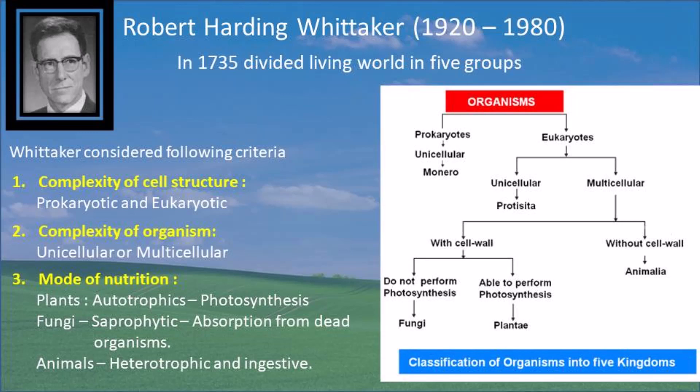All living organisms are made up of cells — they may be unicellular or multicellular, but all are made of cells. These cells can be prokaryotic or eukaryotic. In prokaryotic cells, the nucleus is not surrounded by any layer — a nuclear membrane is absent. In eukaryotic cells, a nuclear layer is present around the nucleus, and a membrane is also present around the other organelles. This was the first criterion.